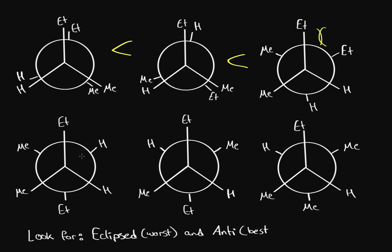The other positive is that we can compare each and every gauche interaction. Here we have an ethyl-ethyl interaction, an ethyl-methyl, and a methyl-methyl. Now over here, what's similar? We do have that same ethyl-methyl and that methyl-methyl. But instead of an ethyl-ethyl interaction, we just have another ethyl-methyl. And since a methyl group is smaller than an ethyl group, this actually makes it better.